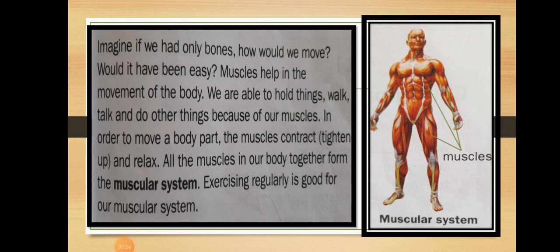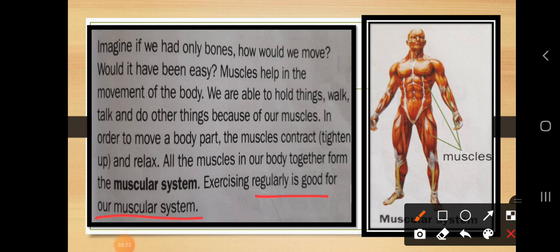Suppose you want to run — you may feel sweating on your body because your muscles are working hard. They feel tired and want to relax. Regular exercise is needed to keep our muscular system up to date. Exercising regularly is good for our muscular system. If you want to grow in a healthy manner, you have to do exercise regularly. Exercise protects and strengthens our muscular system, and muscles help in the movement of the body.